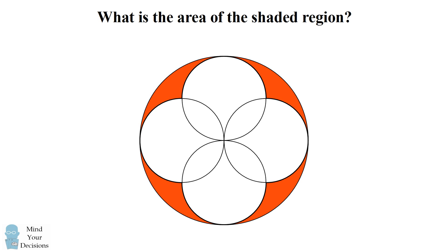In other words, what is the area of the shaded region in the following diagram, which is the area of the region between the large circle and the boundary of these four smaller circles? The large circle's diameter equals 84. This problem was asked to primary school students in Singapore. Can you figure it out? Give this problem a try and when you're ready keep watching the video for the solution.